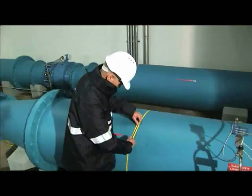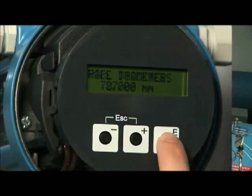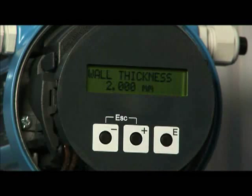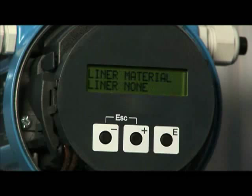If the pipe diameter cannot be found, we suggest measuring the circumference of the pipe and entering that value. Now enter the pipe wall thickness. If this is unknown, it is possible to estimate the value.